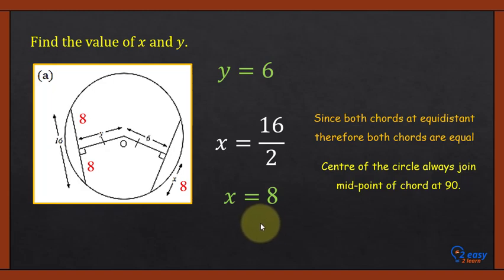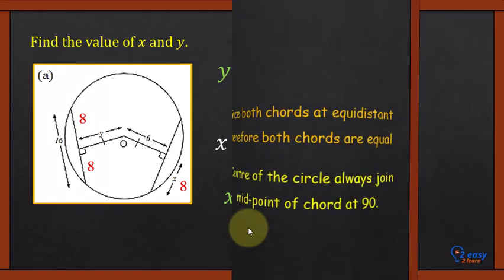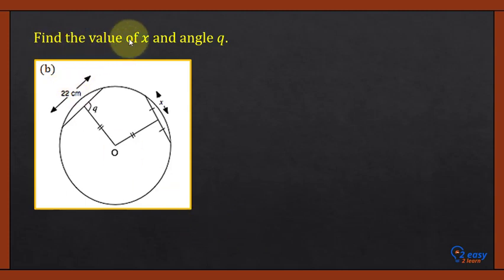Find the value of x and angle Q. The two tick marks on the chord lengths indicate both chords are equal. So this chord is 22 centimeters, and therefore the other chord is also 22 centimeters. The single tick marks on the two distances from the center indicate those distances are equal, meaning the marked point is the midpoint of the chord.